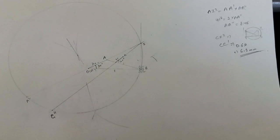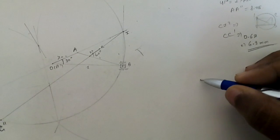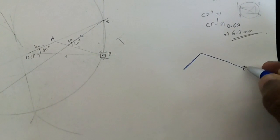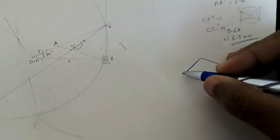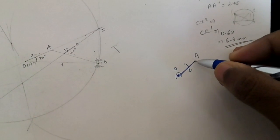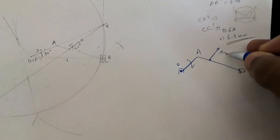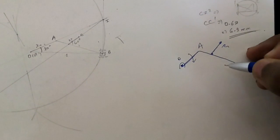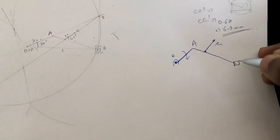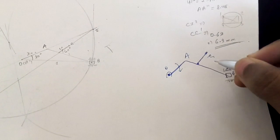This is the configuration diagram. The setup has a slider, a fixed link, and a crank OA. You have to find the center of curvature for point C — that is, you have to find point C-dash — so C to C-dash would be your radius of curvature for this point. B is also labeled, and there is a slider.